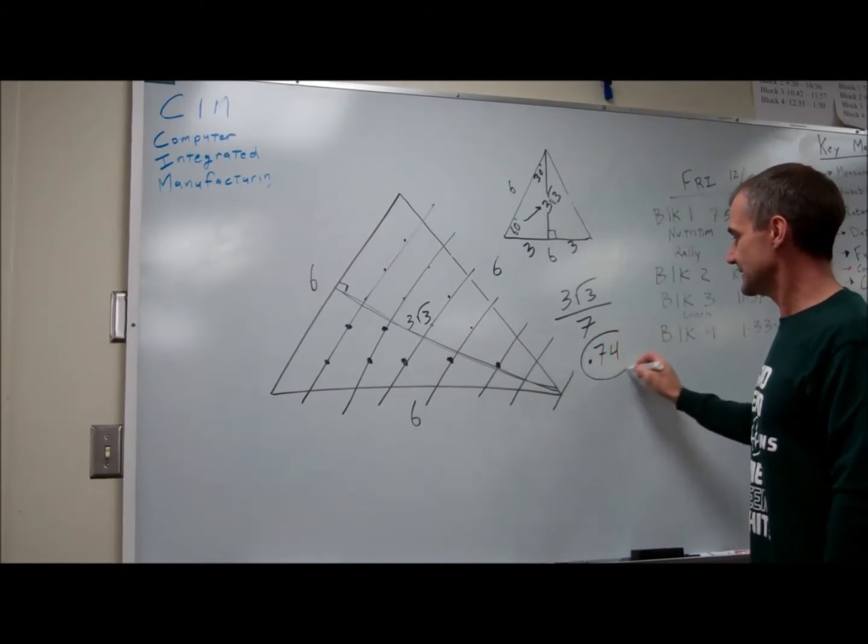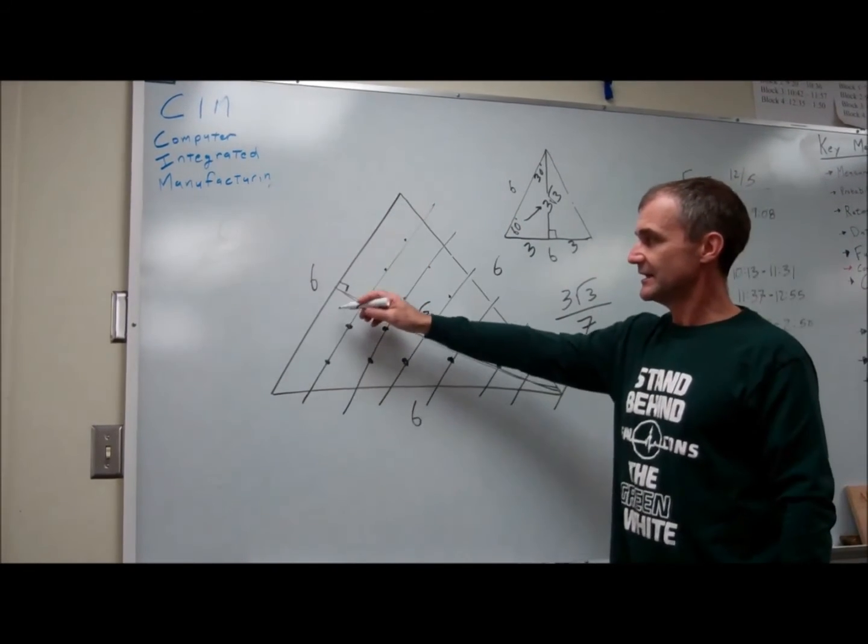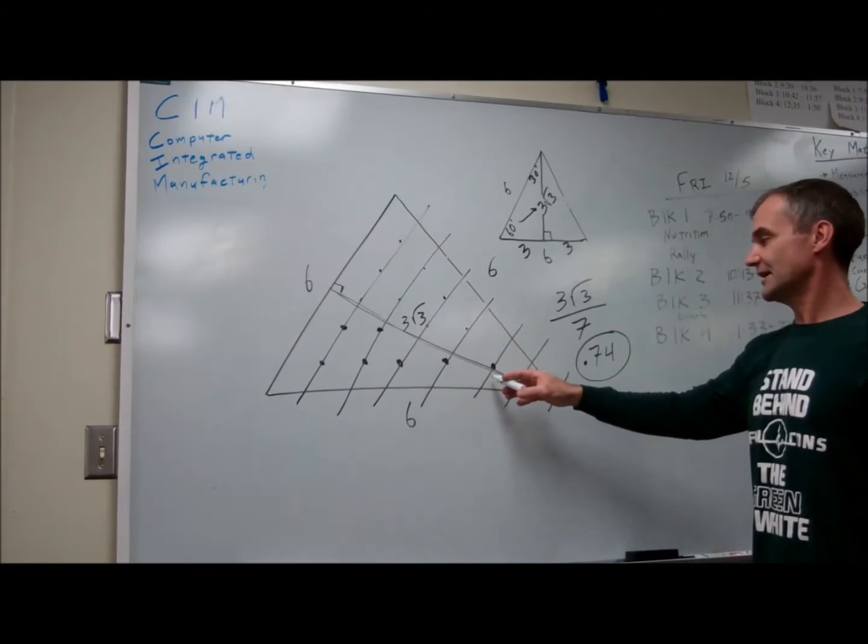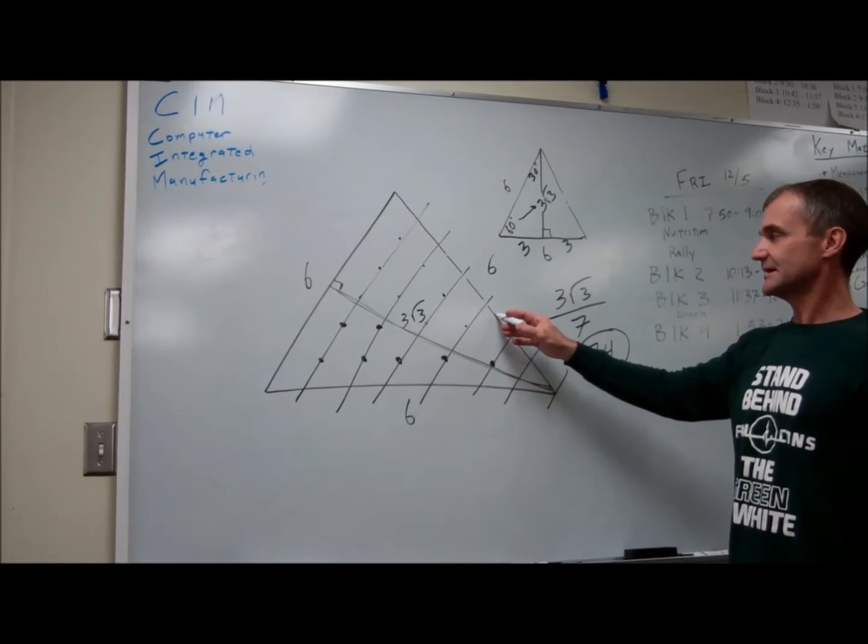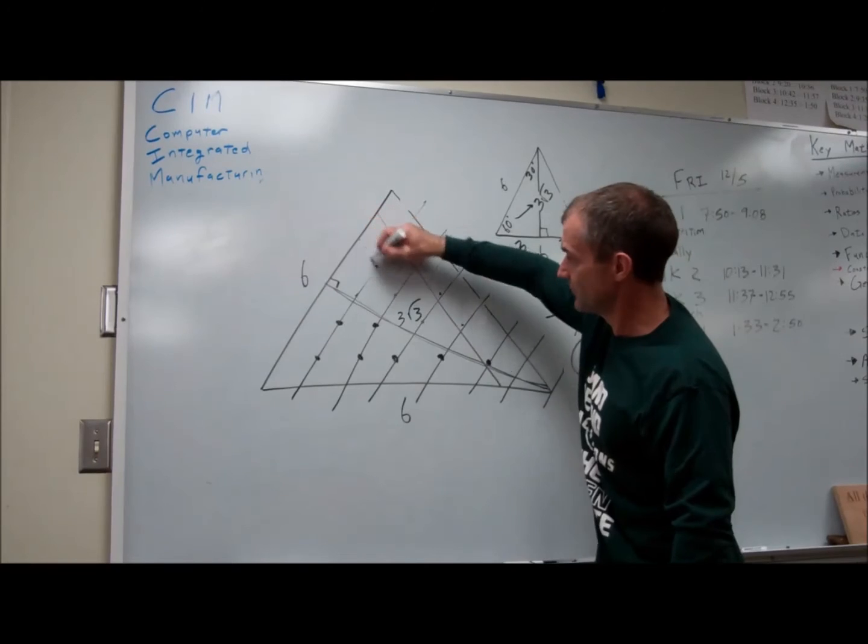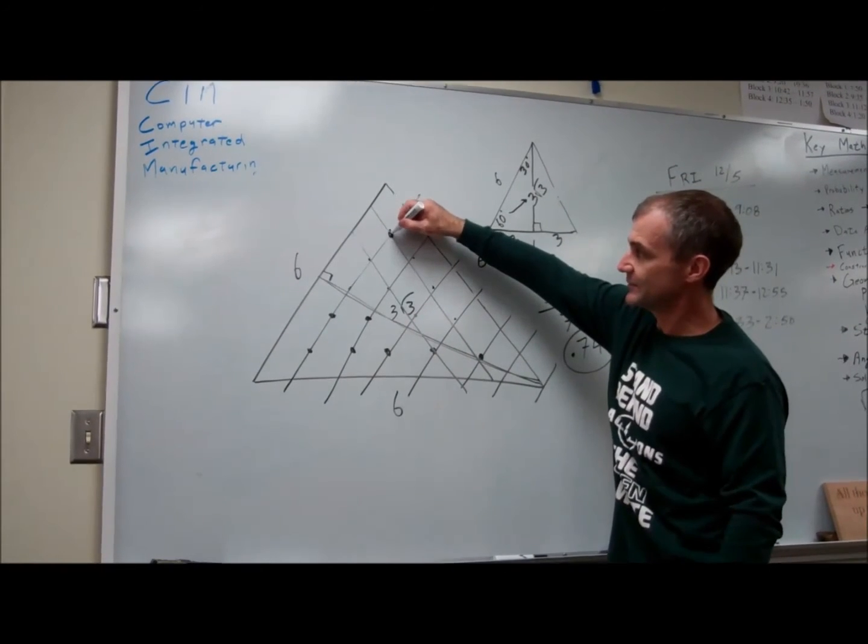So if I take this line right here and I offset it 0.74, five times that will get me to here. I take this line, offset it this way, 0.74, and that's going to give me the point of intersection.